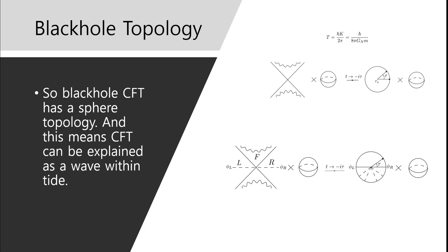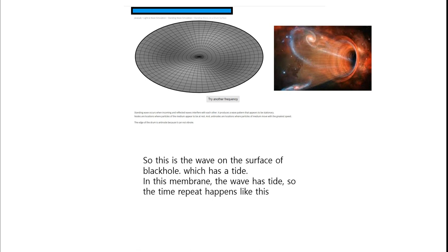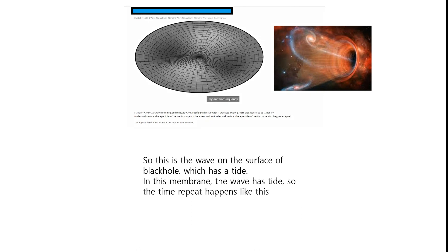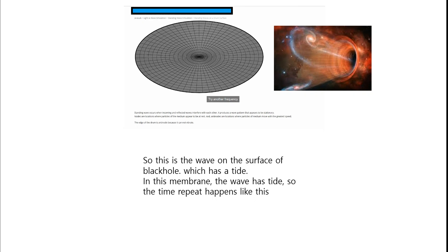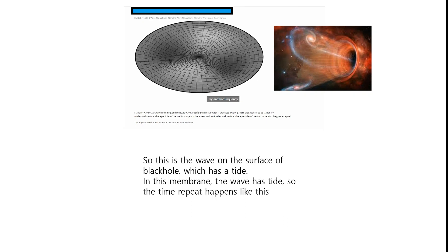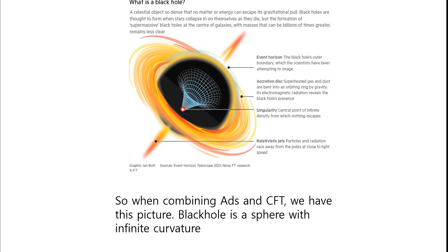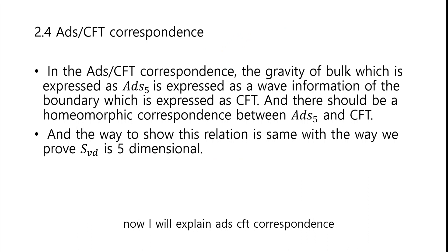So black hole CFT has a sphere topology, and this means CFT can be explained as a wave within a tide — a wave on the surface of the black hole which has a tide. In this membrane, the wave has a tide, so time repetition happens like this. So when combining ADS and CFT, we have this picture: black hole is a sphere with infinite curvature. Now I'll explain ADS-CFT correspondence. In the ADS-CFT correspondence, the gravity of the bulk, which is expressed as ADS-5, is expressed as the wave information of the boundary, which is expressed as CFT. There should be a homeomorphic correspondence between ADS-5 and CFT.